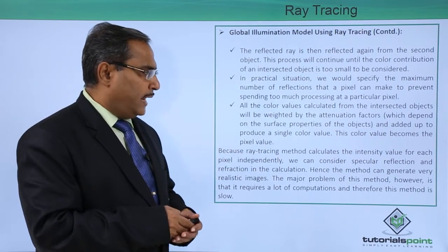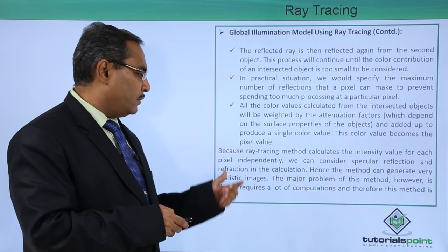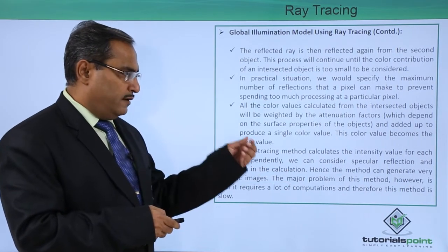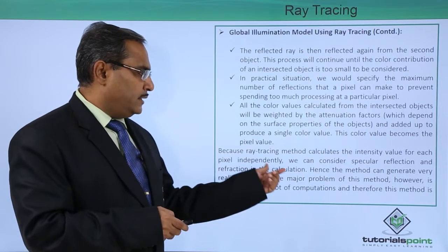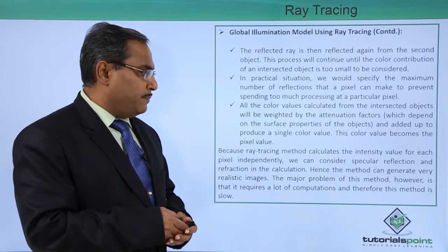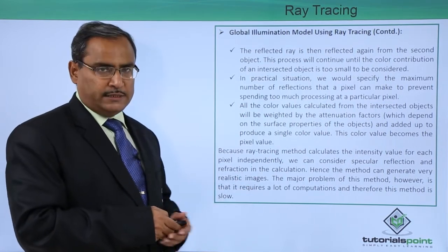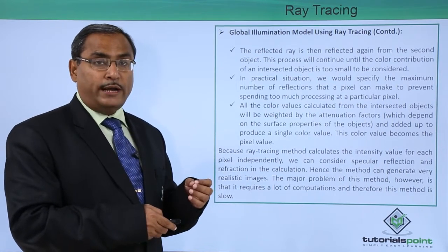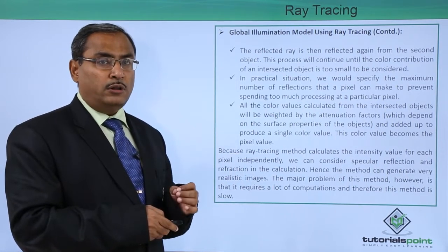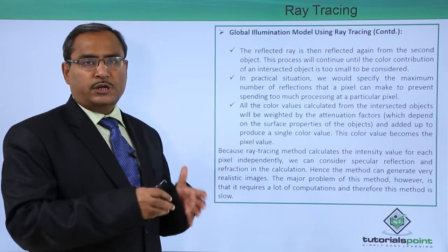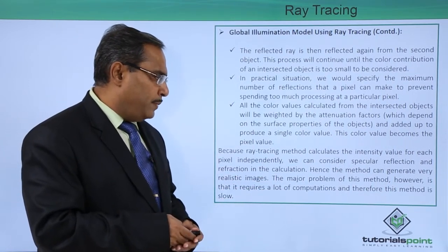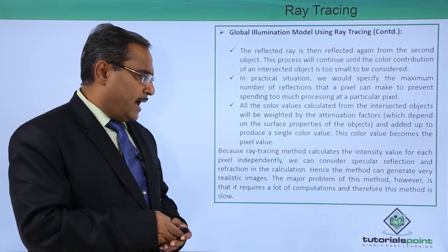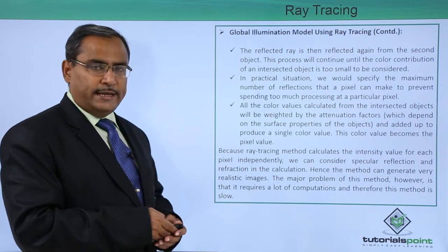Because the ray tracing method calculates the intensity value for each pixel independently, we can consider specular reflection and refraction in the calculation. Hence, the method can generate very realistic images, as we are considering intersecting points for each reflection. The major problem of this method, however, is that it requires a lot of computations and therefore the method is slow.